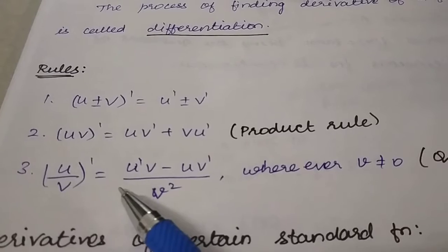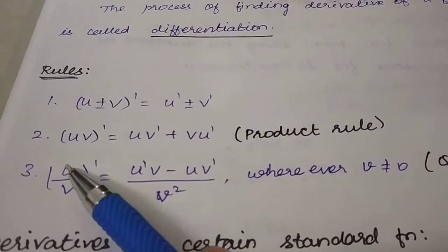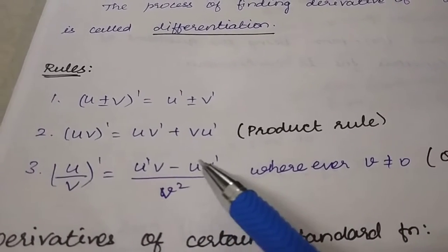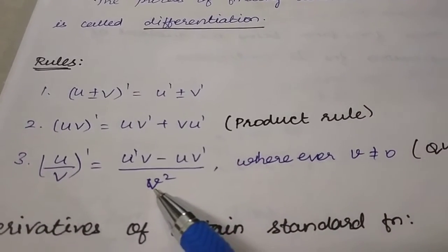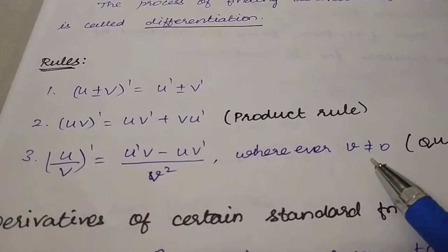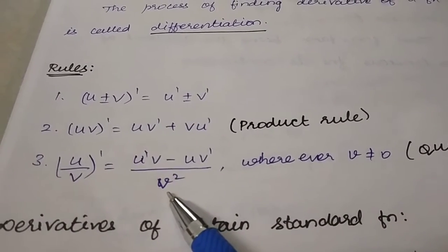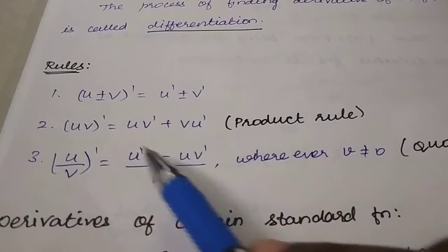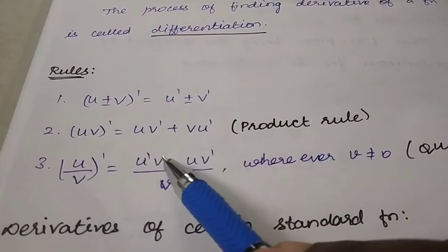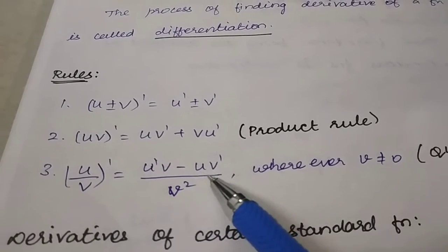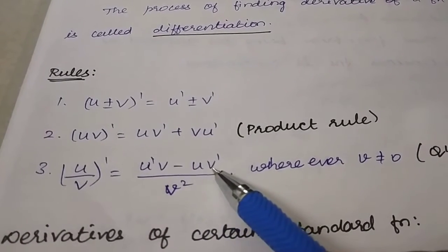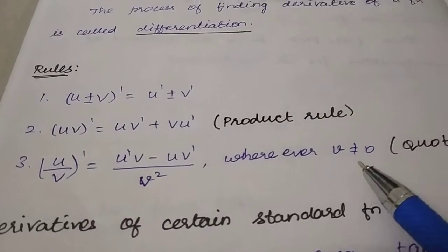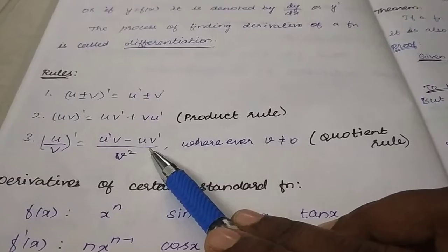The next rule is the quotient rule: (u/v)' = (u'v − u·v') / v², provided v is not equal to 0. Differentiate the numerator times the denominator as it is, minus the numerator as it is times the derivative of the denominator, all divided by v squared. This is a very important rule — memorize it.